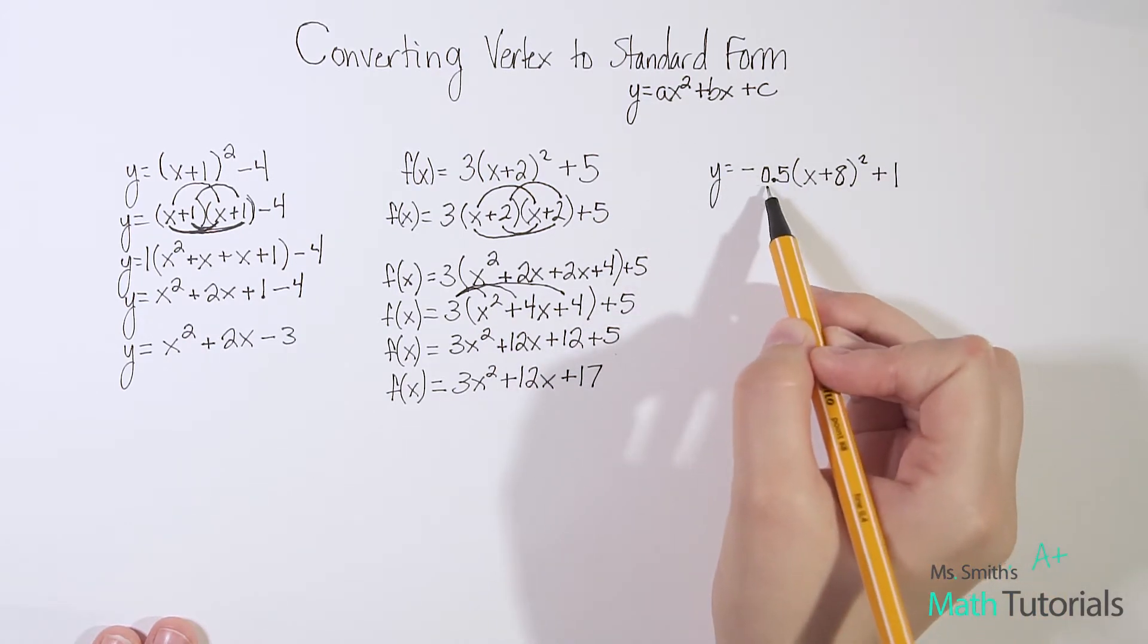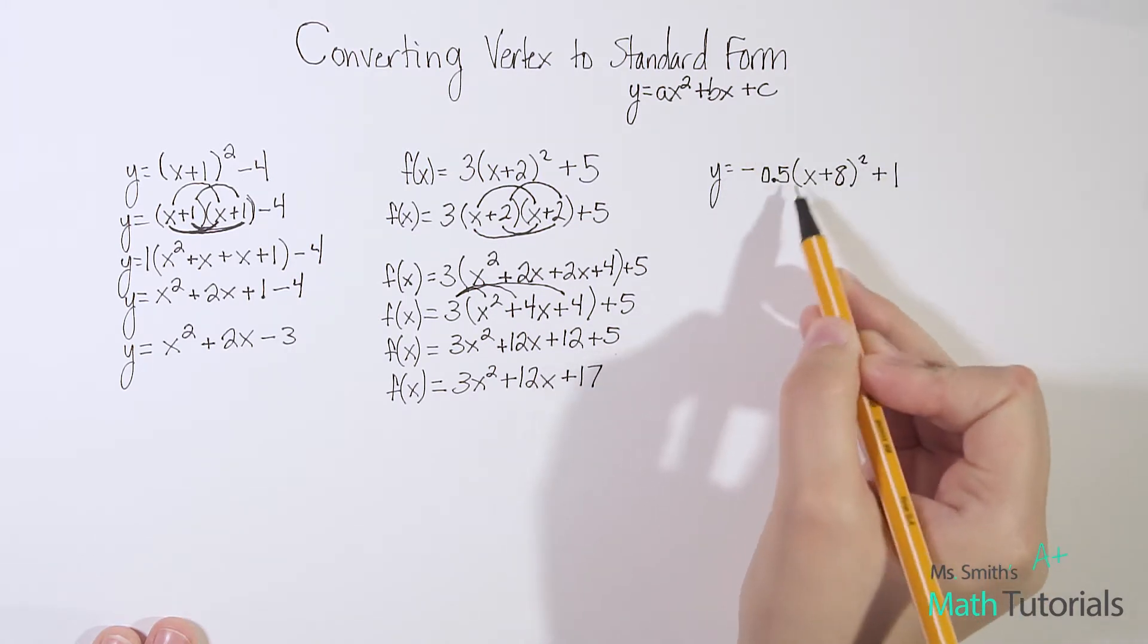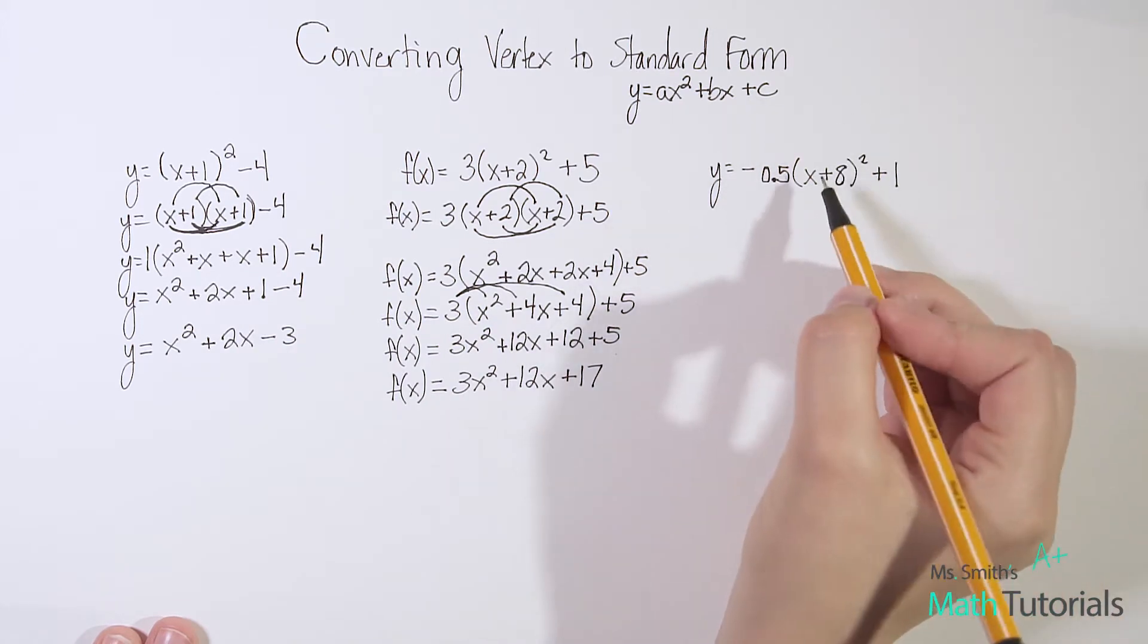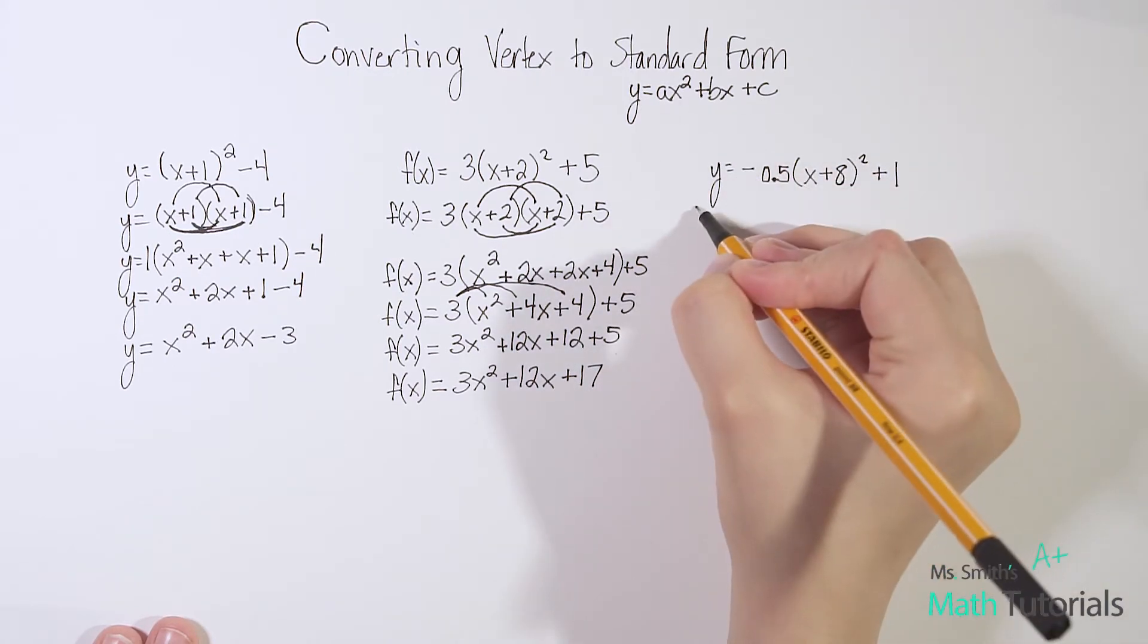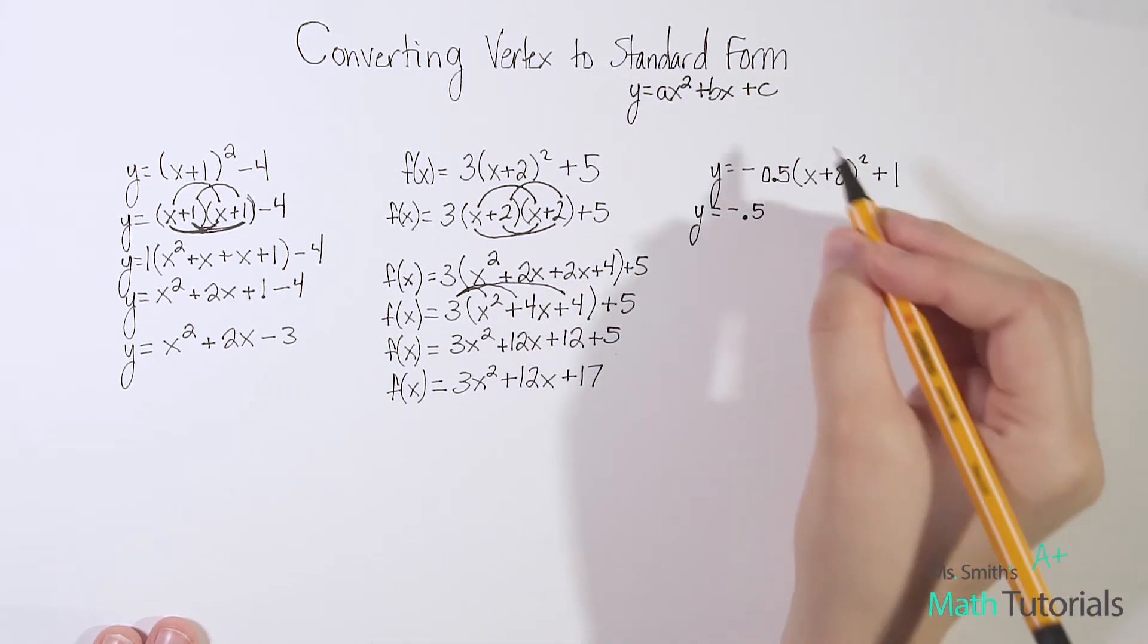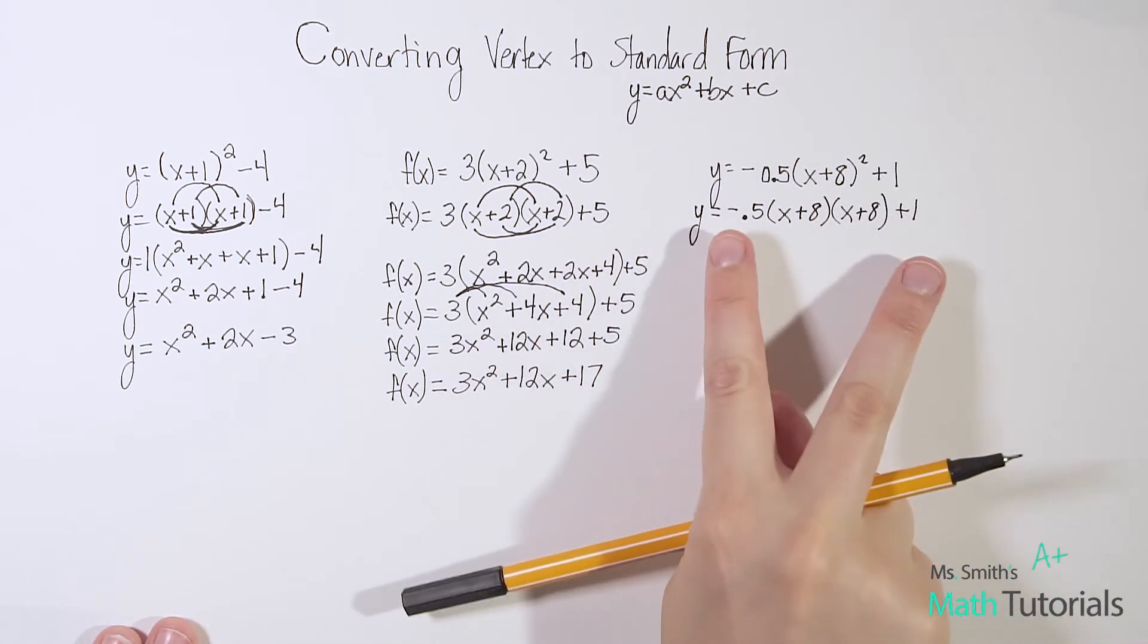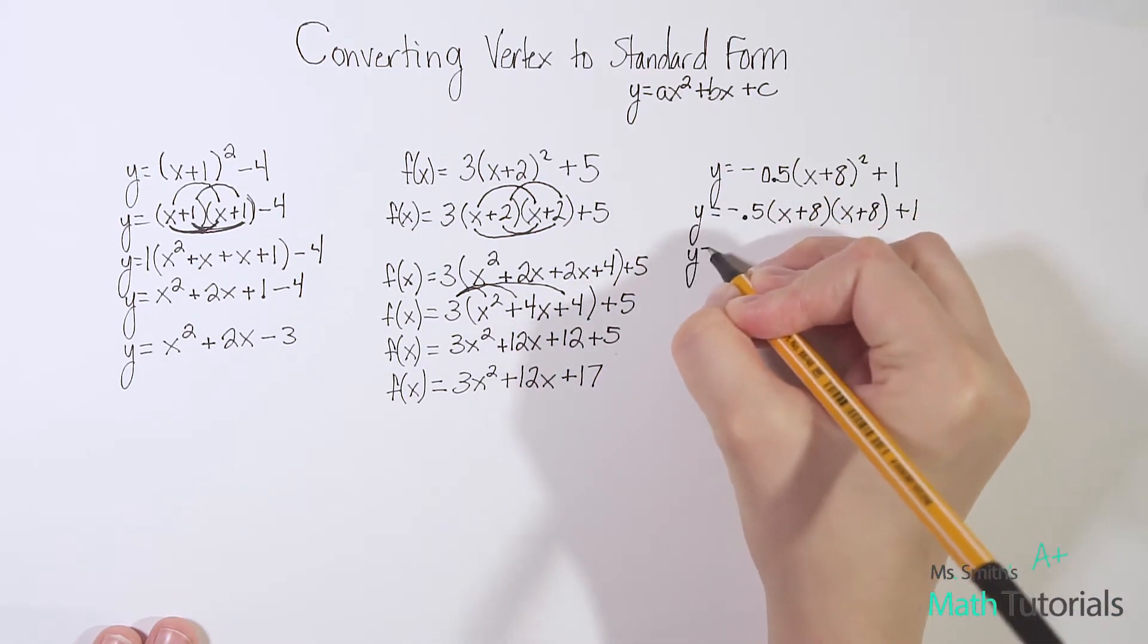y = -0.5(x+8)² + 1. Don't be scared because there's a decimal here. Sometimes I'll give you a fraction. Don't let that scare you. We solve it the exact same way we just did those two. First thing we'd want to recognize is we've got this (x+8)². So we want to actually write it out twice. y = -0.5 times (x+8)(x+8). Then we have our +1 tagging along. Remember -0.5 and the +1 are just going to kind of tag along until we're ready for them.